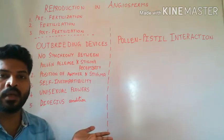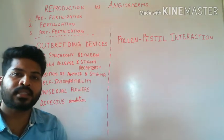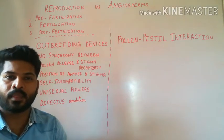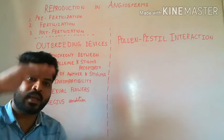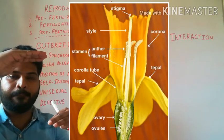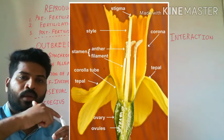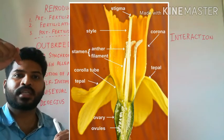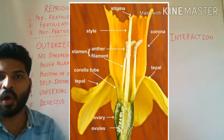Point number two: the position of anther and stigma. Mostly the stigma is kept at a higher position whereas the anthers lie below the stigma, because of which pollen grains of the anther cannot land on the stigma of the same flower, thus preventing autogamy.